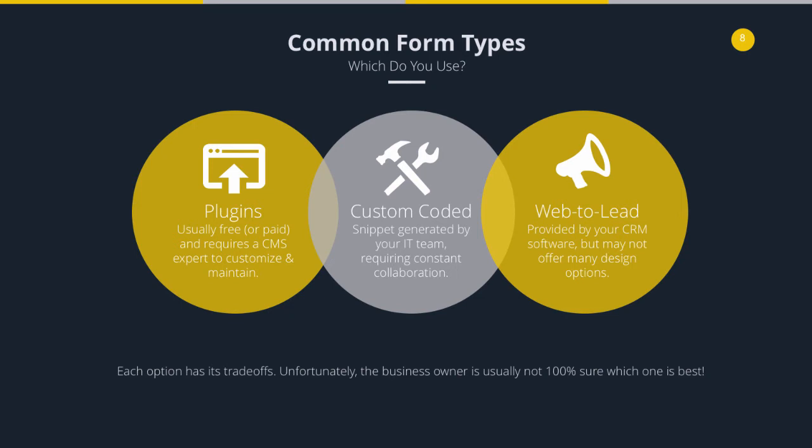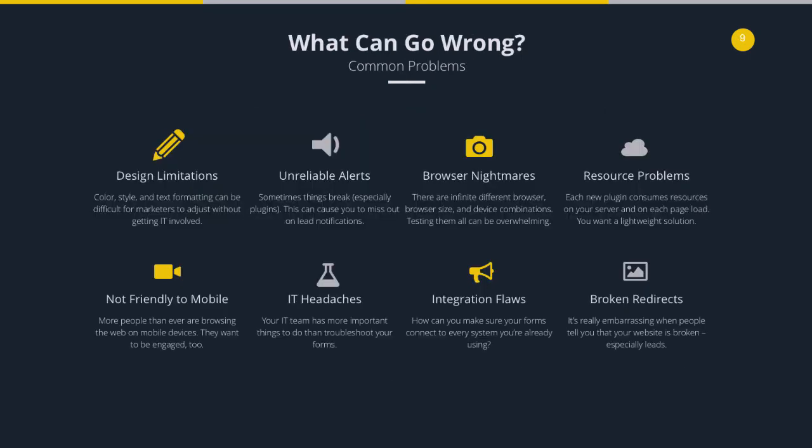For somebody that's not really technically minded, all of this just sounds like a big cloud of confusion — surely there's a solution that can make all of these options less relevant. Across those three options, there seem to be several common issues. Obviously, design limitations — we talked about the back and forth that can happen between IT and marketing. The second is unreliable alerts: if the form plugin stops sending email alerts every time a lead fills out a form, that's disastrous for your business. Days could go by with people asking for information, and that lead has already moved on to the next supplier.